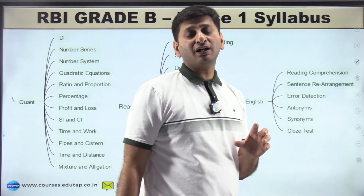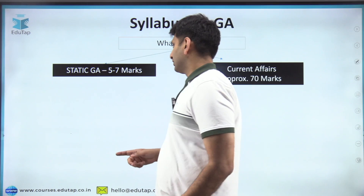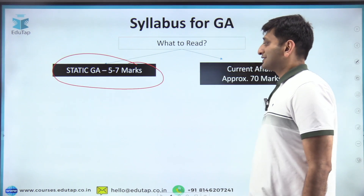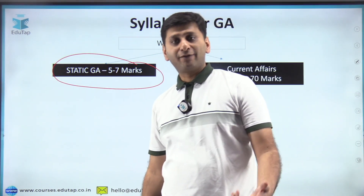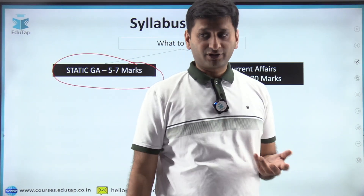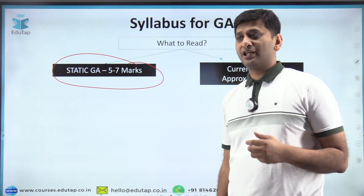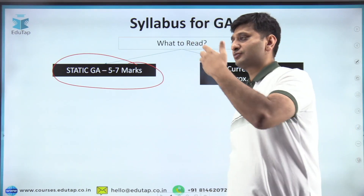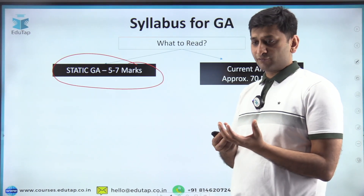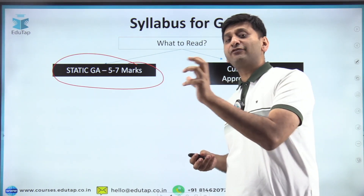For GA, out of 80 marks, there is some static GA, but this is not standard static GA about national parks or thermal power plants. This static GA is derived from current affairs. For example, if Asian Games are being held in China, that brings in static knowledge like China's capital or the host city.